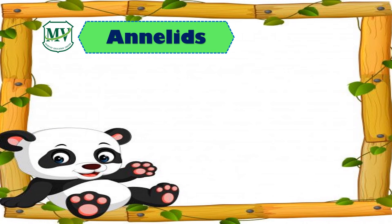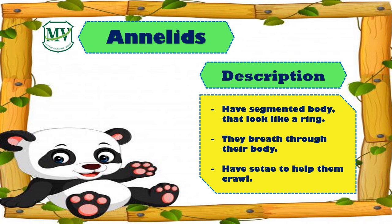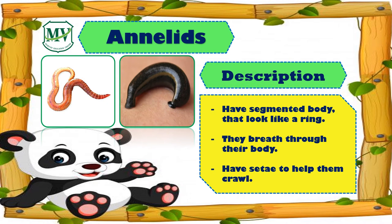Invertebrates are divided into eight groups. First, we have the annelids. Annelids have segmented bodies that look like rings, like the leech and the earthworm. They breathe through their bodies and have sets of bristles to help them crawl.